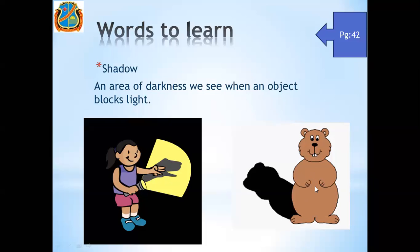The light is falling on the object and it is blocking the light, so its shadow is forming. This is the shadow because she is blocking the light with her hand. You can see this darkness — this is the shadow. Similarly, here, this darkness is shadow.